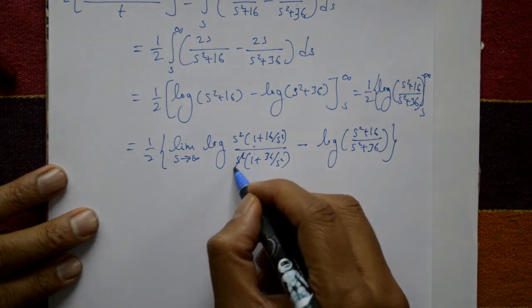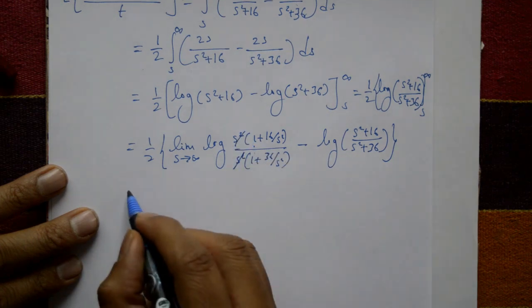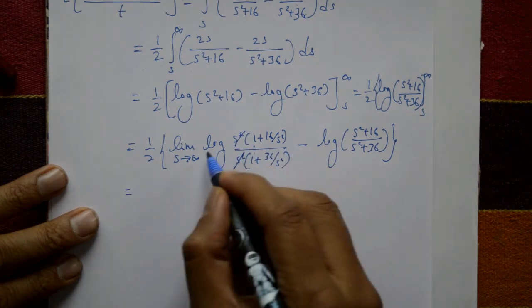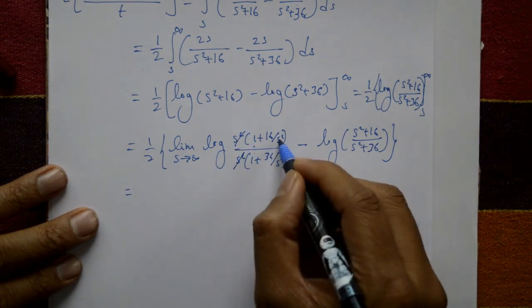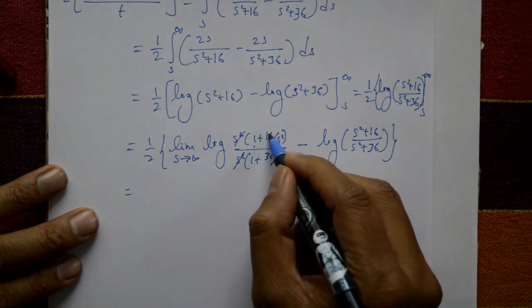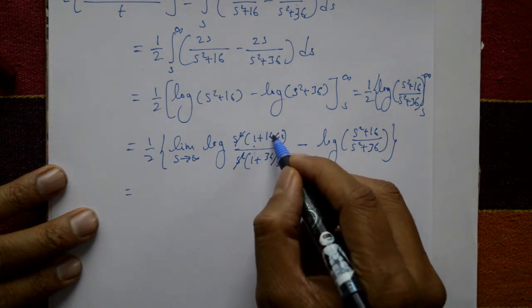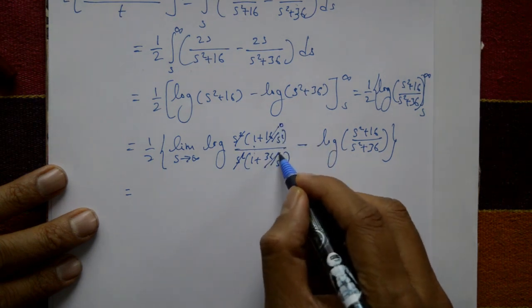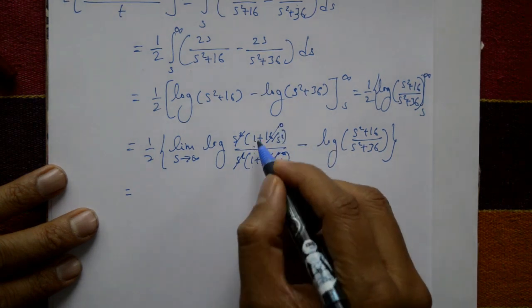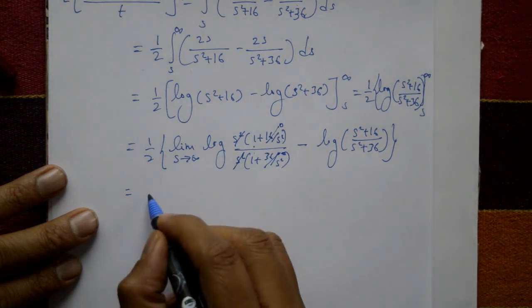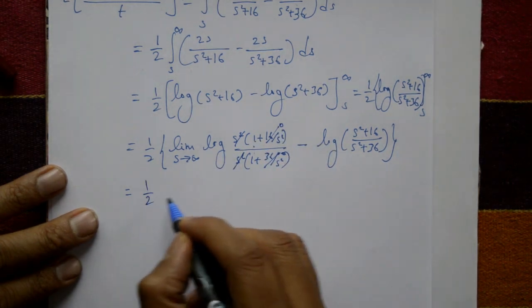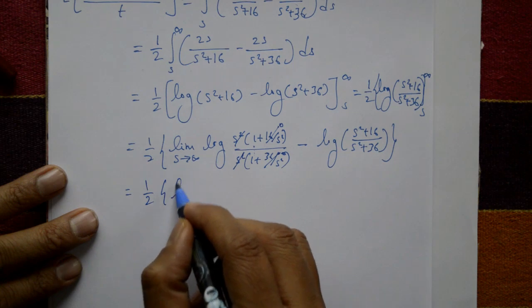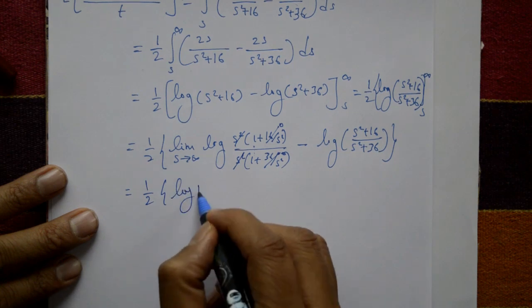At the upper limit, s² cancels and putting s equal to infinity: 16/infinity is 0, 36/infinity is 0, so we get log(1/1) equals log(1) equals 0. Therefore the upper limit contribution is zero.